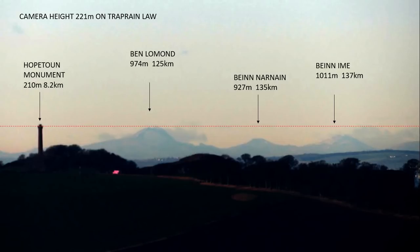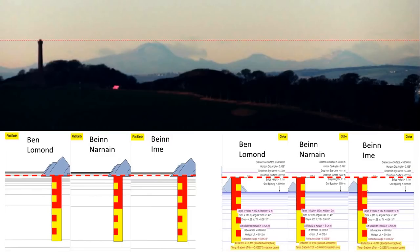Yet those mountains all appear completely below the line, which is very obviously impossible on a flat earth. To make it clearer, I took the figures on screen and put them into Walter Bisland's curvature calculator, which provides a graphic model of the objects for which you place size and distance into his calculator. So rather than just getting numbers back, you actually get a graphic image. I've done this for each of the three mountains plus the Hopeton Monument and Byers Hill on which the monument stands.